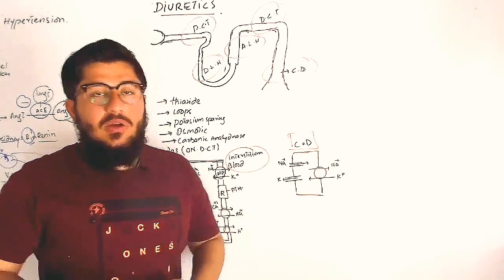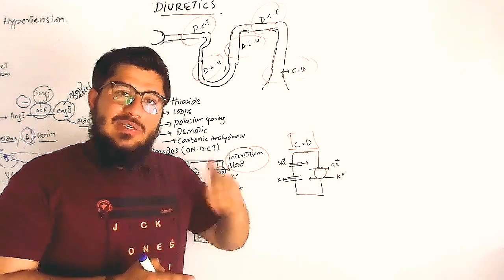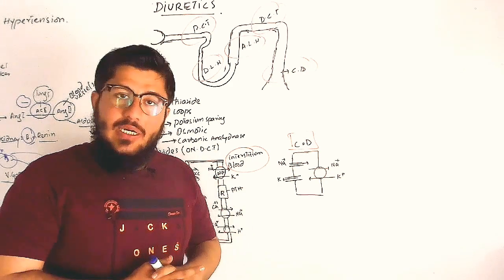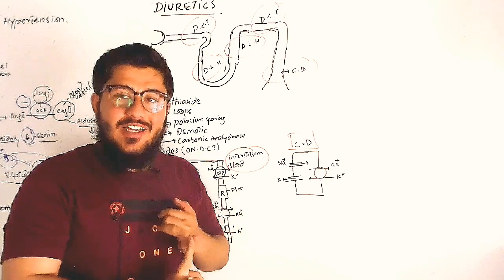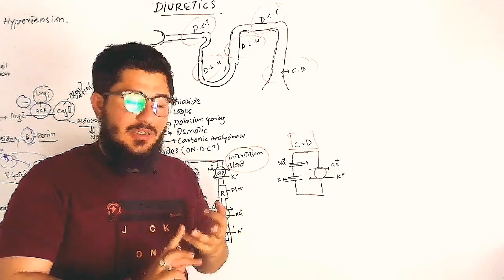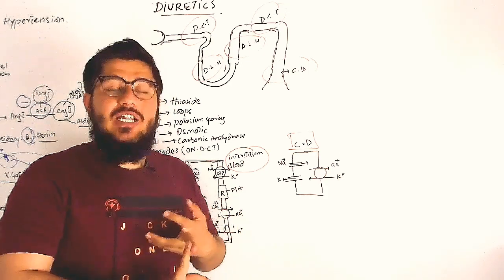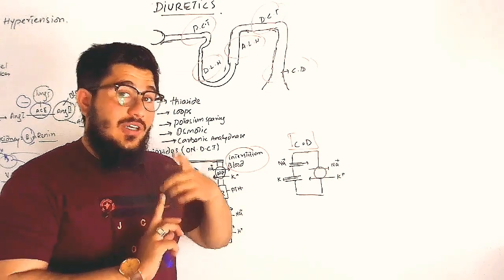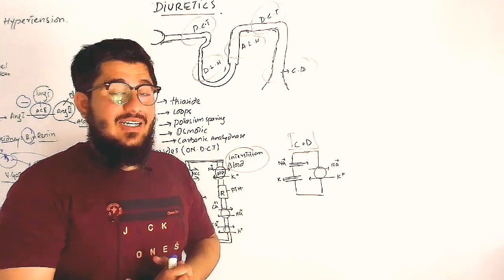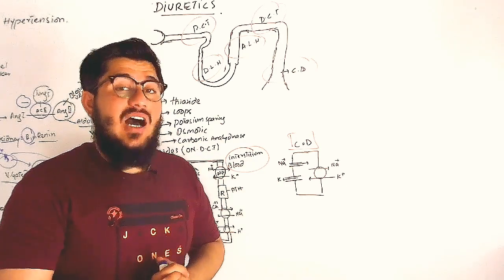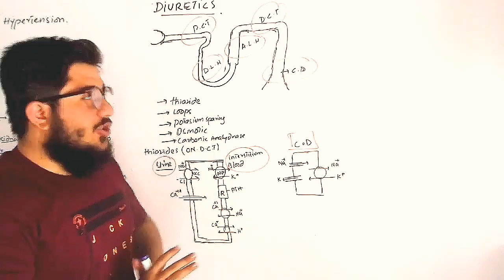Antihypertensives continue. In the last video we studied ABC, and today we will study D. A for ACE inhibitors, B for beta blockers, C for calcium channel blockers, and in this video we will study D, that is diuretics.